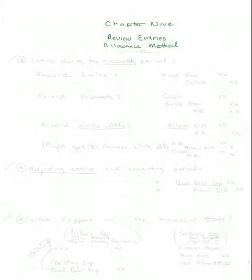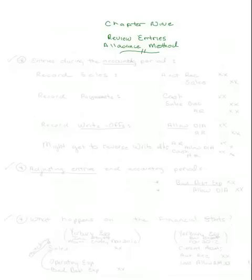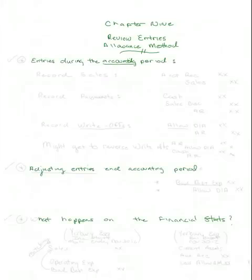For my next spring cast, I would like to continue on with chapter 9, and I want to review the entries that you make during the accounting cycle through the allowance method of accounting for doubtful accounts. I am going to ignore inventory, and I'm not going to use numbers. I want you to focus on the entries that you make and how they're described. I want to look at the entries made during the accounting period, the adjusting entries made at the end of the accounting period, and what happens on the financial statements — following this in the order of the accounting cycle.